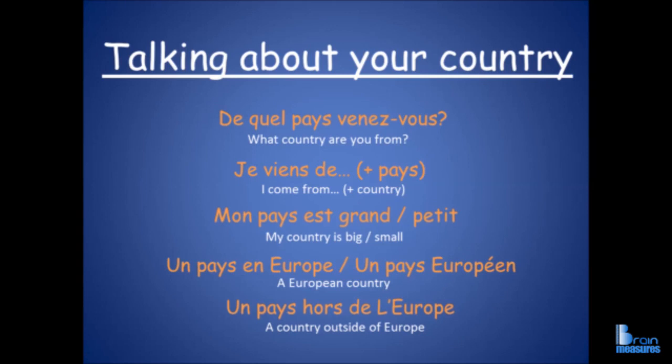Underneath that we have un pays en Europe, or alternatively un pays européen — 'a European country.' And un pays hors de l'Europe — 'a country outside of Europe' — obviously quite useful for people who don't live in Europe. Un pays en Amérique du Nord means 'a North American country'.